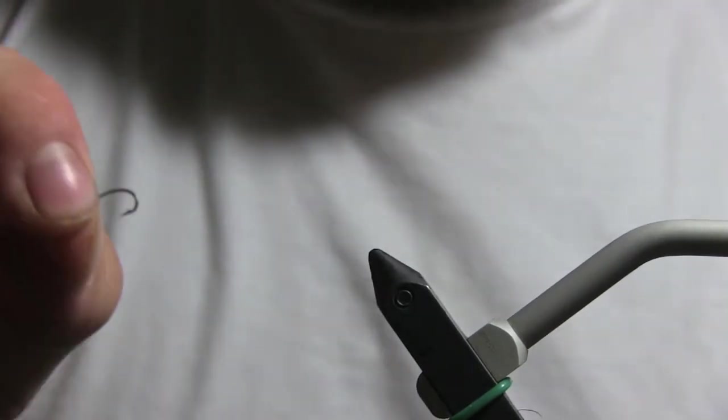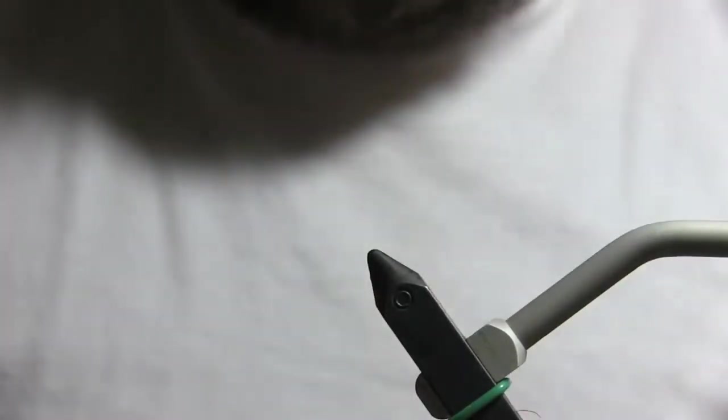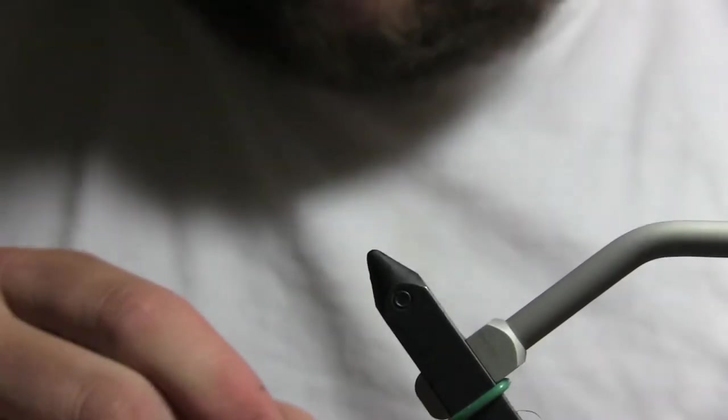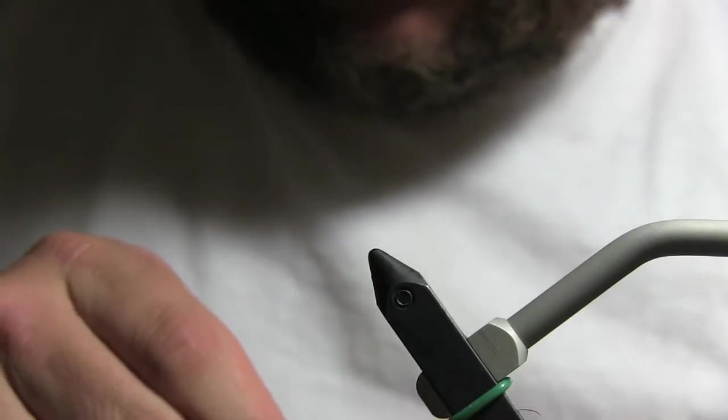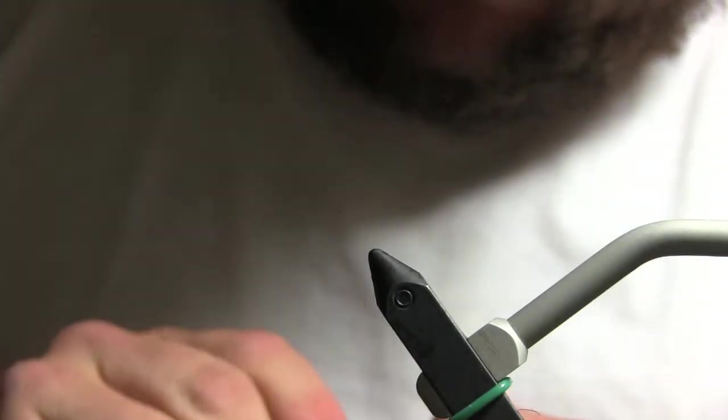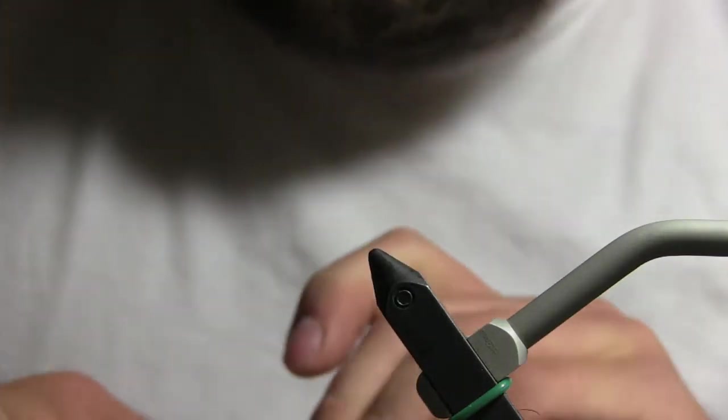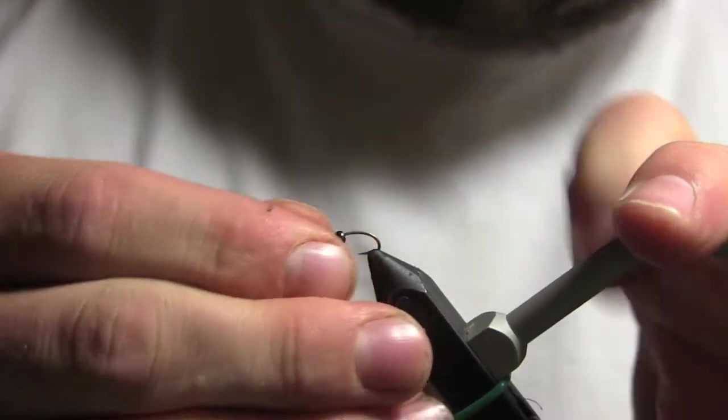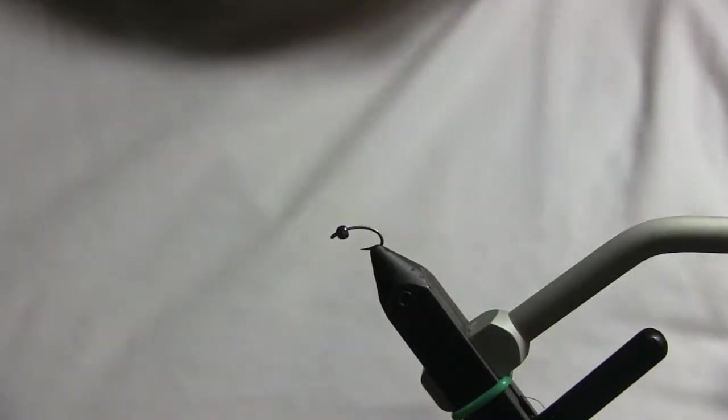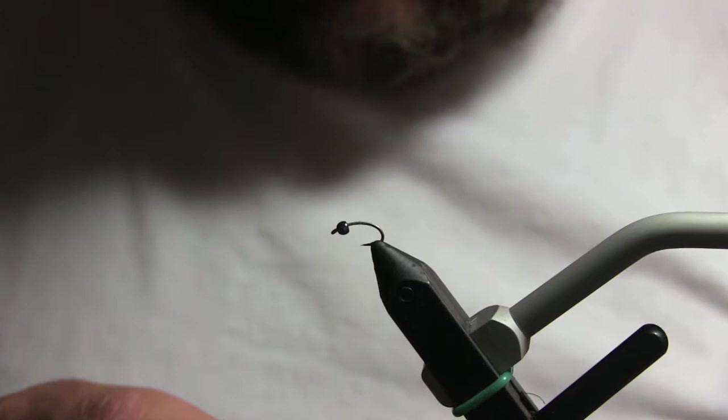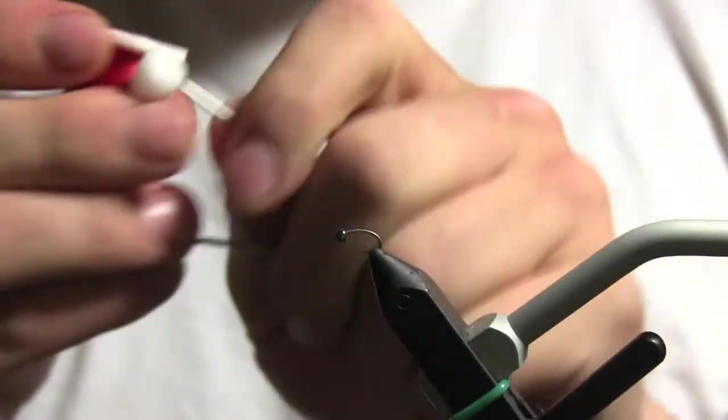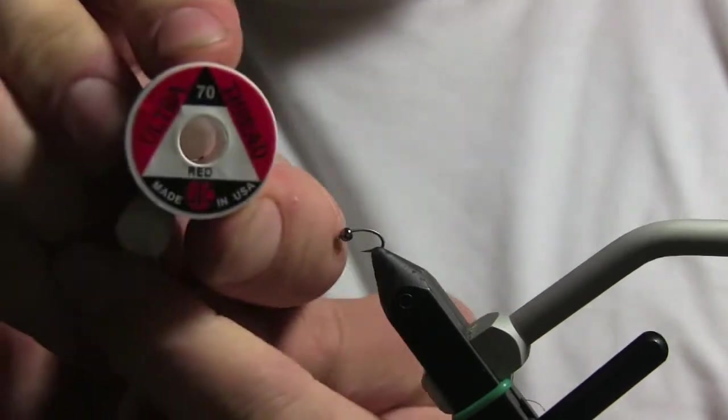You probably know what a scud hook looks like. It's got the curve in it. Got a bead. Now I use a darker color, almost like a tungsten bead color. It's kind of like a nickel. There we go. And also I'm going to use this is the UTC thread in red and this is 70. Okay, so here we go.